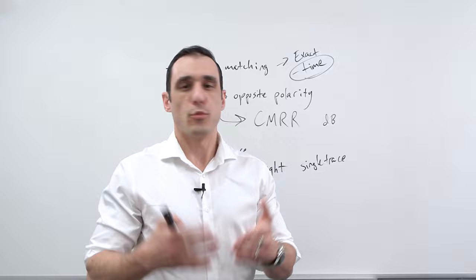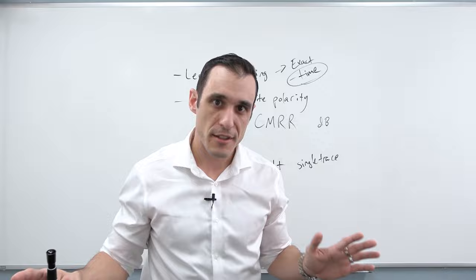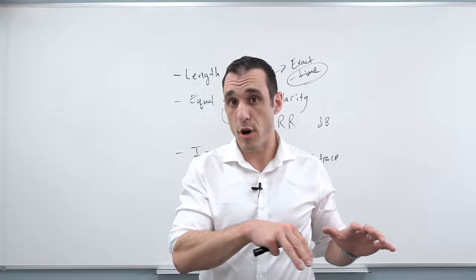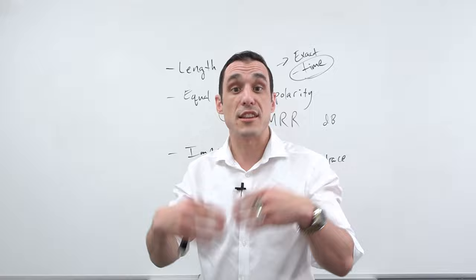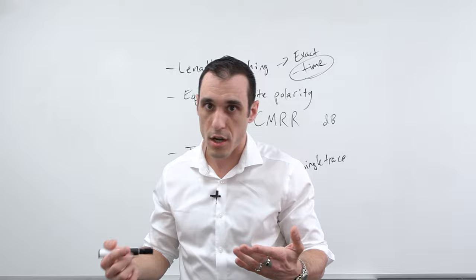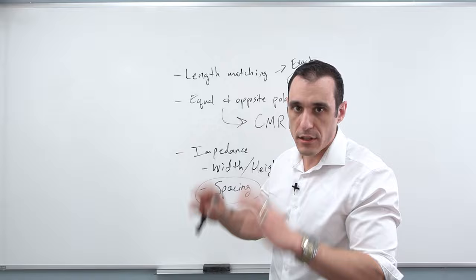One thing you'll see in a lot of guidelines is someone saying that if you're routing differential pairs, they always need to be tightly coupled. What exactly does that mean? Frankly, whenever someone says tightly coupled, they never attach a number to it. There is a reason to put pairs close together, but you don't need to always route them right next to each other. They need a defined spacing if you're aiming for a target differential impedance, but they don't need to be overly close, because if you get them too close, you could violate your differential impedance target because the coupling between them gets too strong.